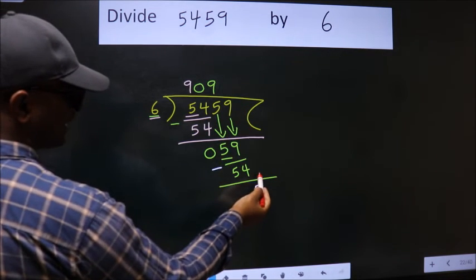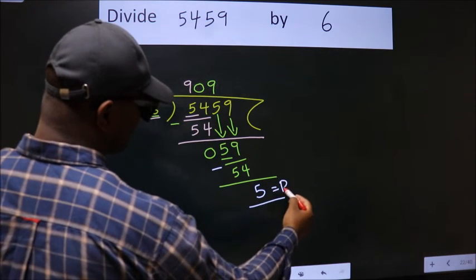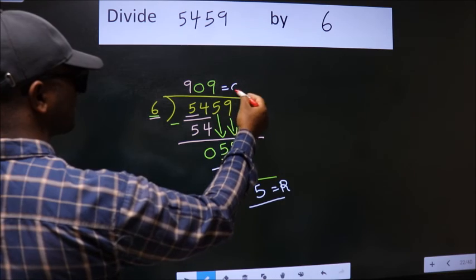No more numbers to bring it down. So, we stop here. This is our remainder. This is our quotient.